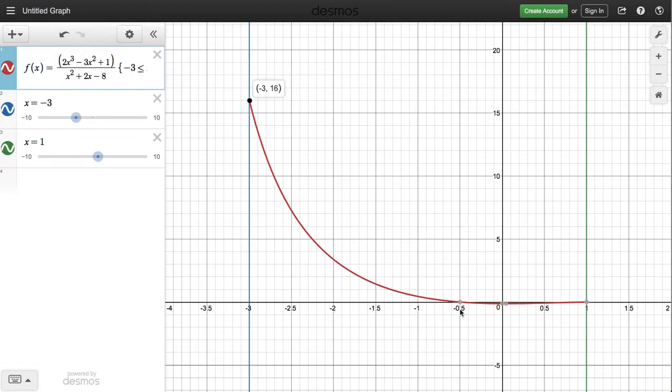We also get a few other intercepts. Here is the x-intercept at negative 5, 0. It seems like there would be another one right there. Yeah, there it is. 1, 0 is another x-intercept.